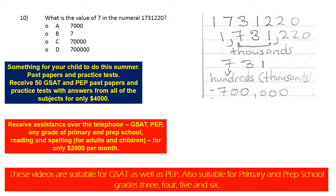Now let's call the number starting from the back. 2, 2, 0: the 0 is 0 ones; the first 2 is 2 tens, or 20; and the second 2 is 2 hundreds. So 2, 2, 0 is 220.